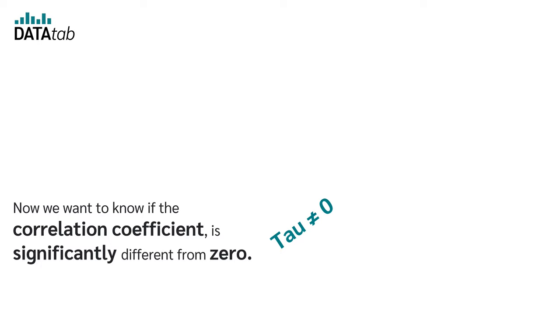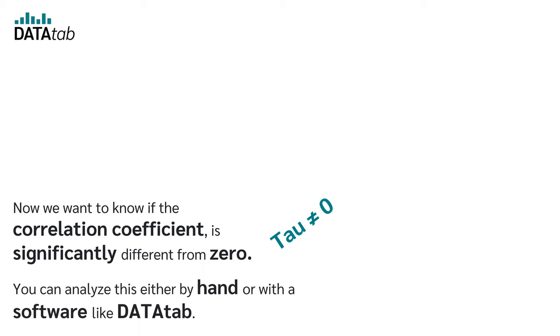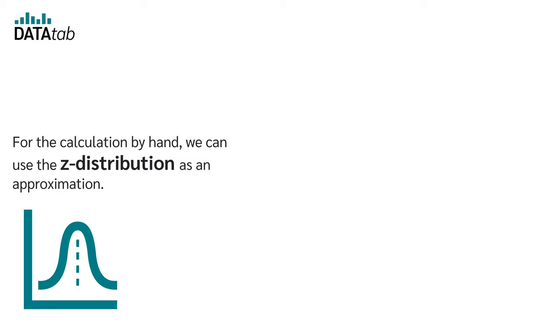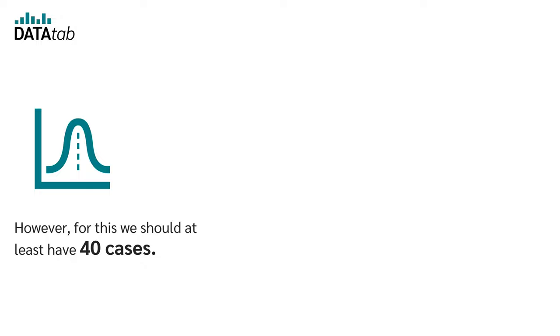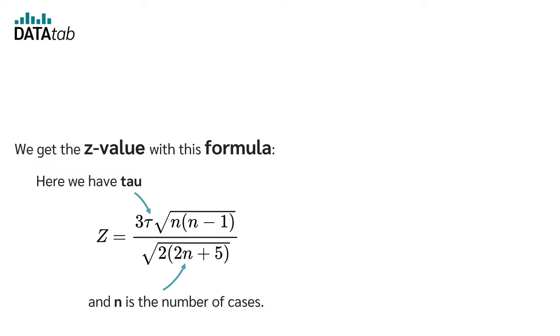You can analyze this either by hand or with a software like DataTab. For the calculation by hand, we can use the z distribution as an approximation. However, for this, we should at least have 40 cases. So, the six cases from our example are actually too few. We get the z value with this formula. Here, we have Tau and N is the number of cases.